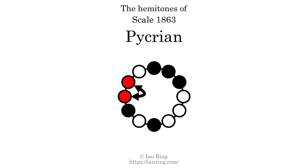Co-hammertones are instances where two hammertones are beside each other. This scale has two co-hammertones, at positions here and here.